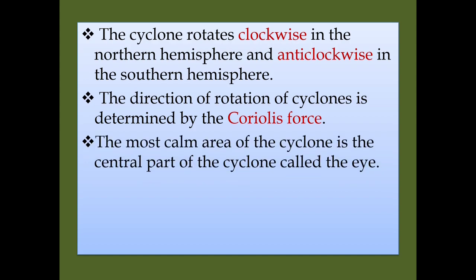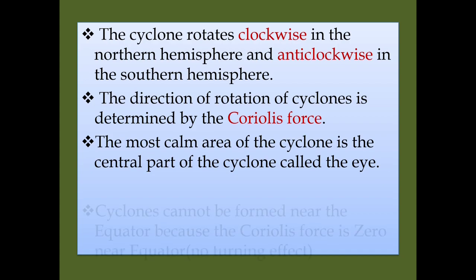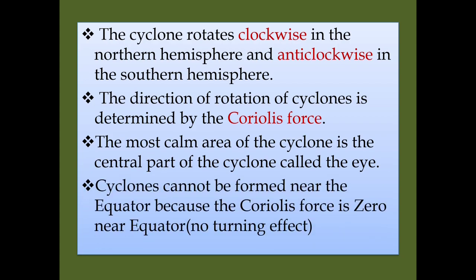The most calm area of the cyclone is the central part, called the eye. Because of the absence of the Coriolis force near the equator, no cyclone is formed near the equator since there is no turning effect.